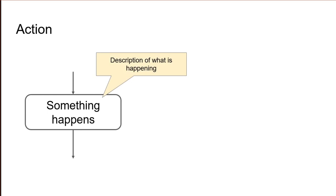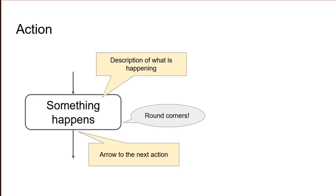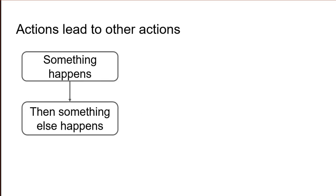An action is a rounded rectangle with a description of something that happens in the activity. It always follows something else and always has an arrow to something else, often another action. It must be drawn with rounded corners — that's important since a rectangle with sharp corners means something else; they indicate a parameter sent to or from an action, something not covered in this video. An action can only have one arrow going out from it, but it can have multiple arrows going into it — that is, several other actions can lead to this same action.